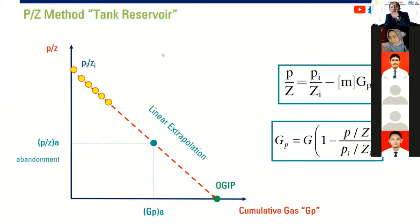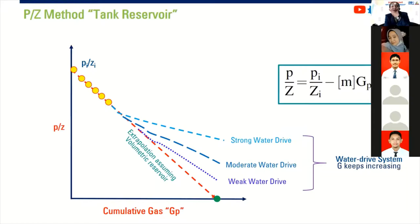But if we have water drive reservoir, it will be more complicated. So the line or the profile will be deviated. It will deviate to a higher GP. Strong water drive, we go with this profile. Moderate water drive, we go by this line and weak water drive. So if you have aquifer influencing your gas reservoir, it will be deceptive. It will deceive you.